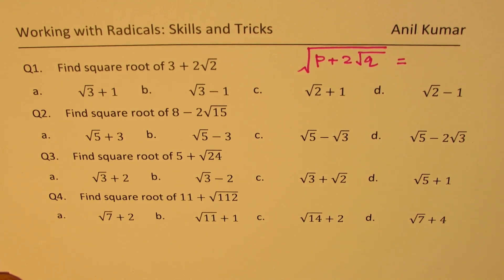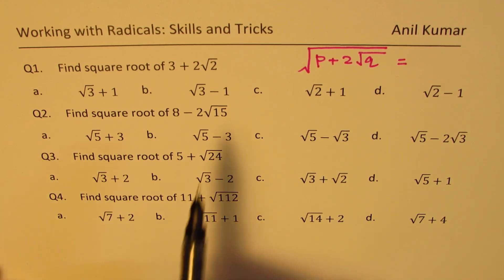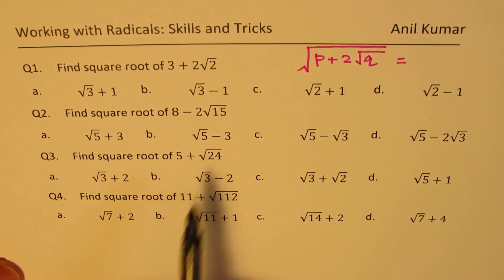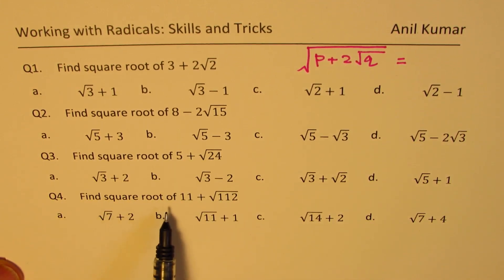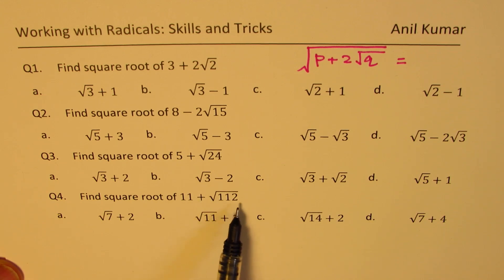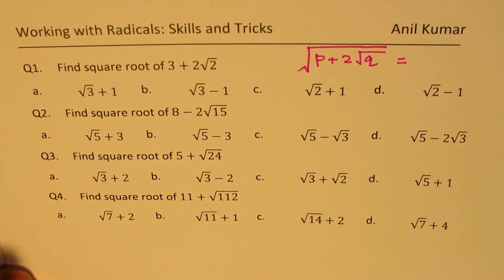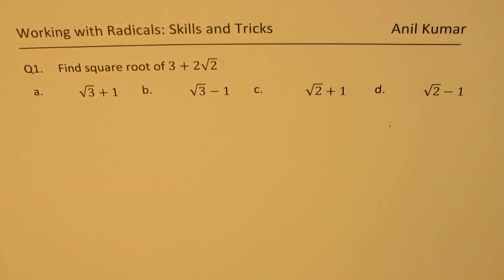You can always pause the video, answer these questions, and then look into my suggestions. The very first question is to find square root of 3 plus 2 square root 2. We are given four choices. Then we have 8 minus 2 square root 15, then 5 plus square root of 24, and we need to find square root of 11 plus square root of 112.